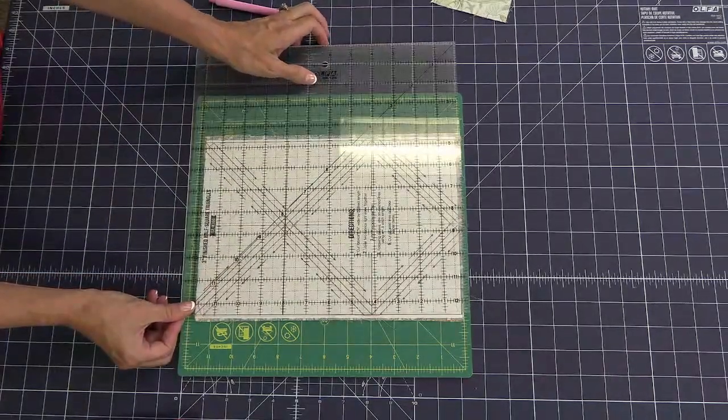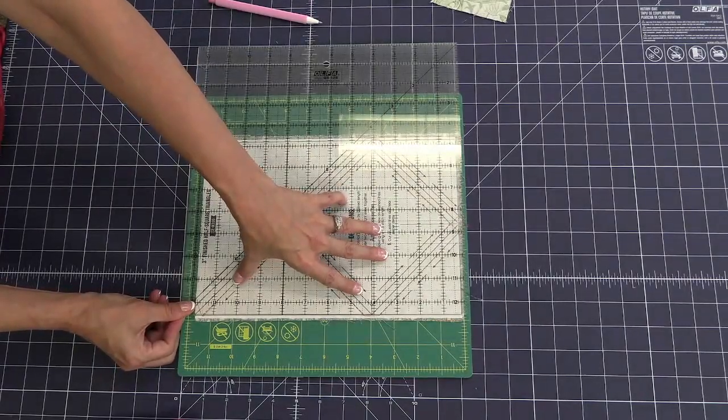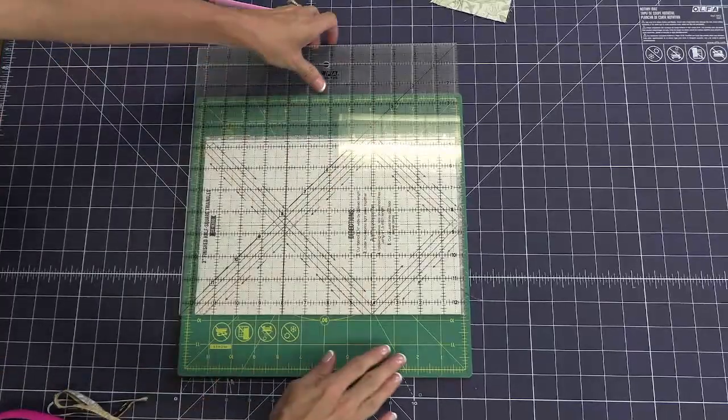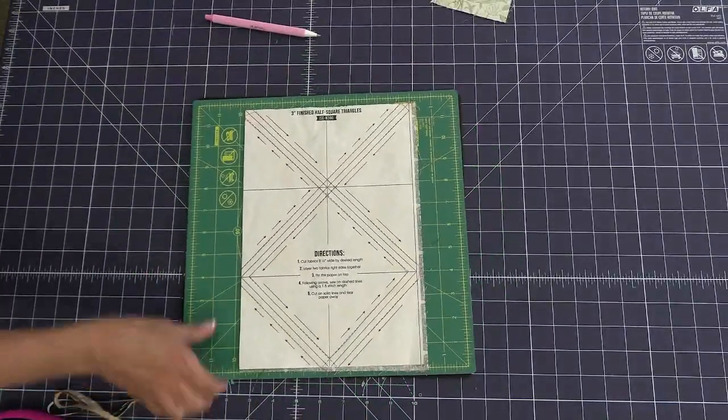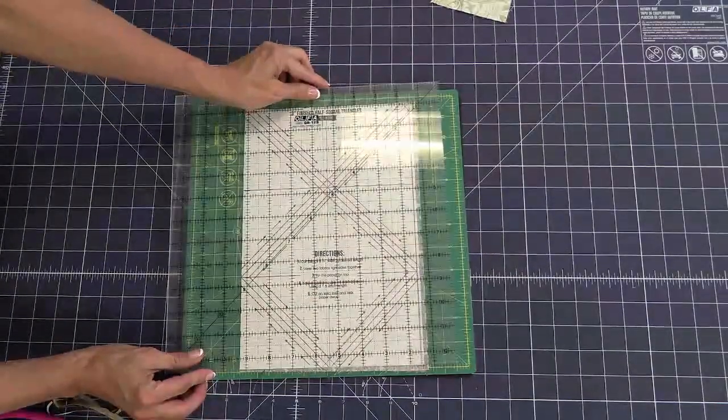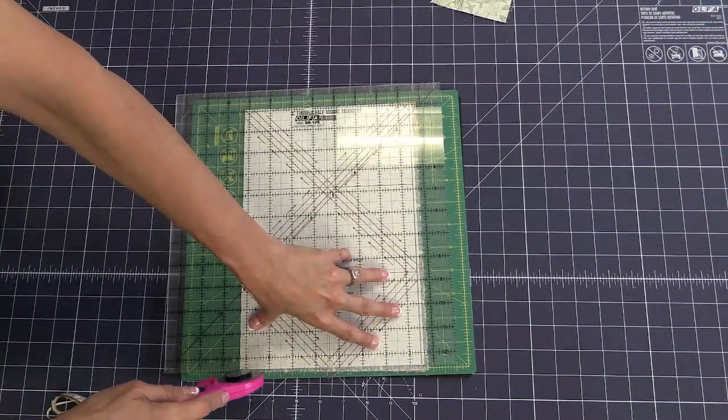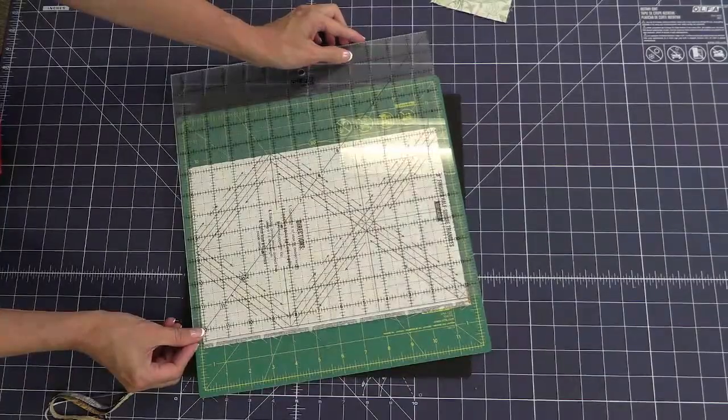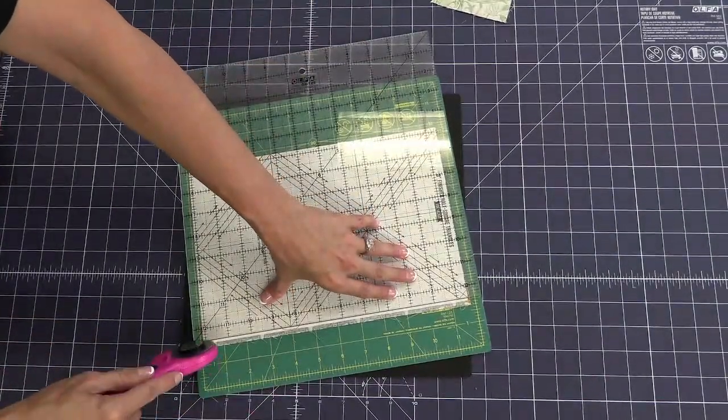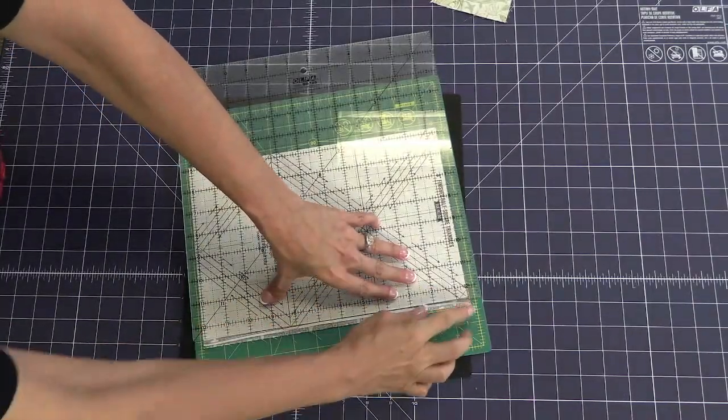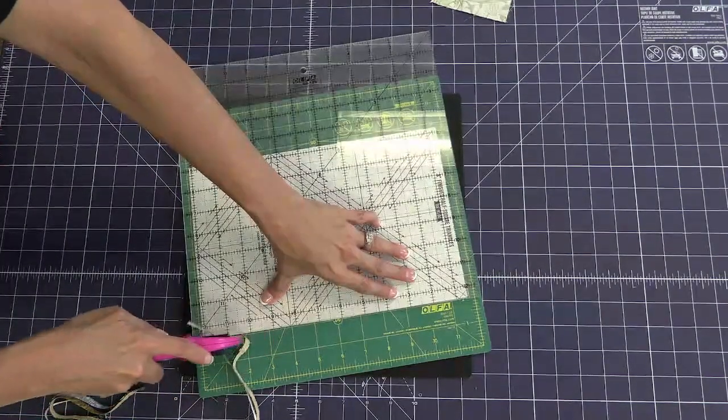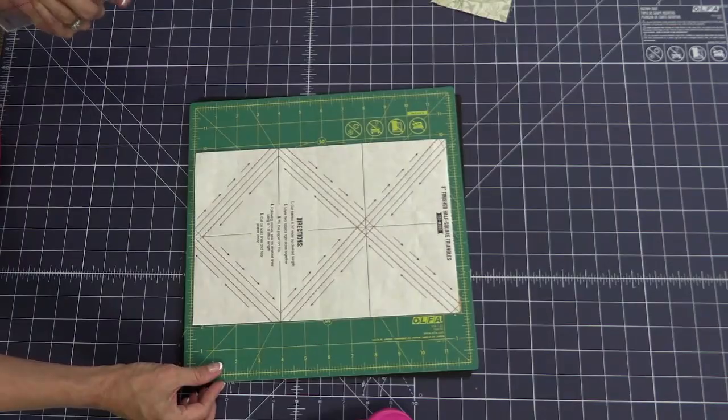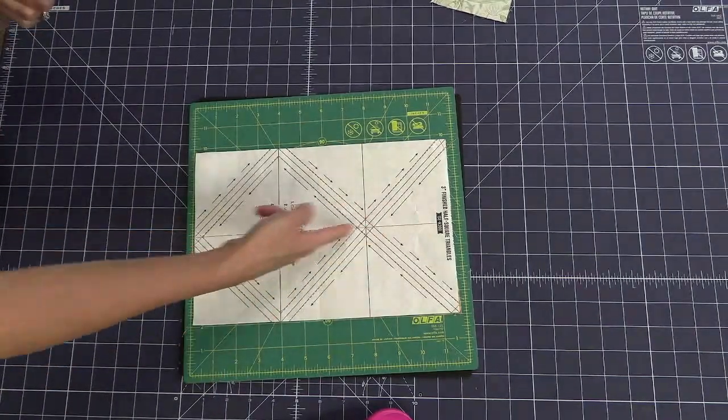So I'm going to put the ruler against those solid lines on the outside. I'm just going to cut it real easily. A new blade really makes a huge difference guys too. So line it up with the edge. Clean it up. So I've cleaned up the edges as you can see.